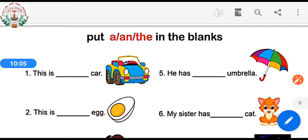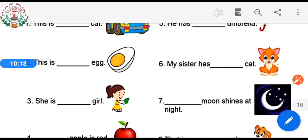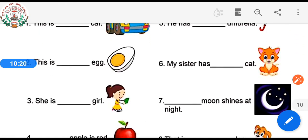First one: This is dash car. Second one: This is dash egg. Third one: She is dash girl.